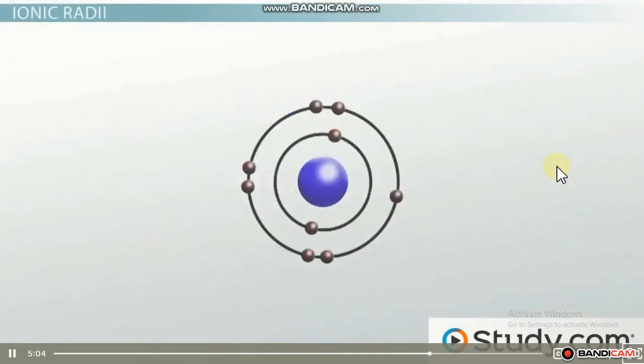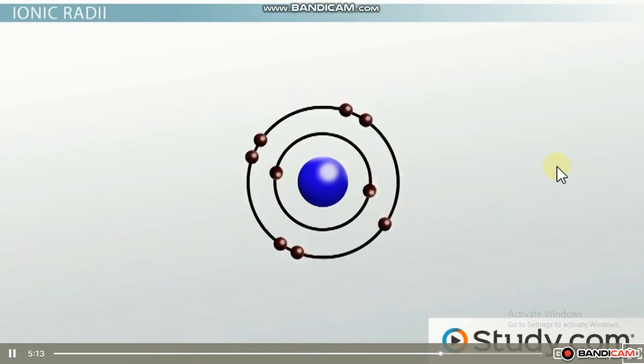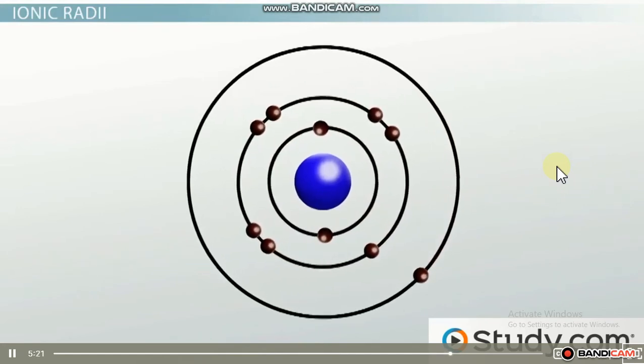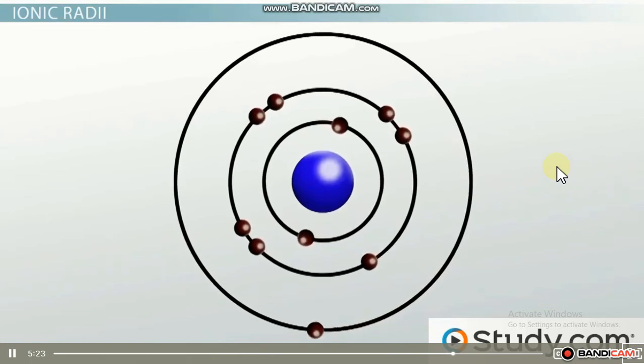Now, what happens when an atom becomes an ion? Atoms become ions by either gaining or losing electrons. We go into more detail on what causes them to gain and lose electrons later, but it is important to know that if an atom gains electrons to form a negative ion, that ion will be larger than its atomic counterpart.